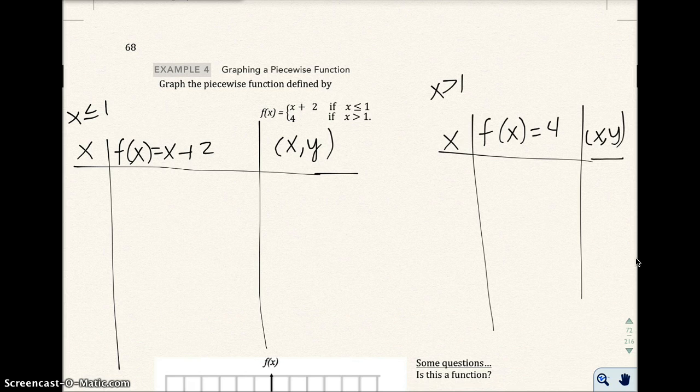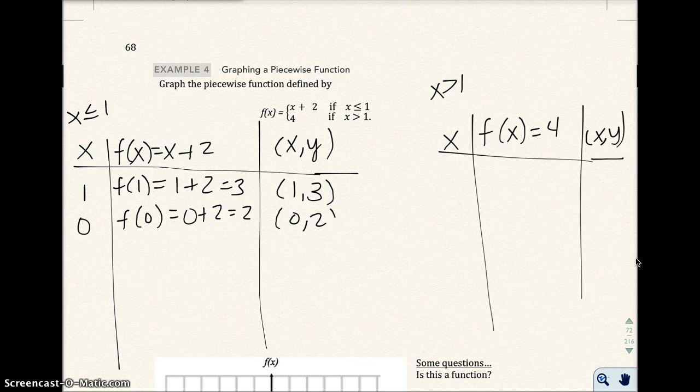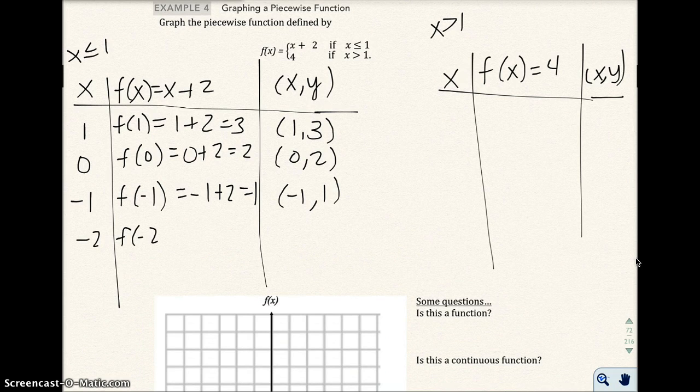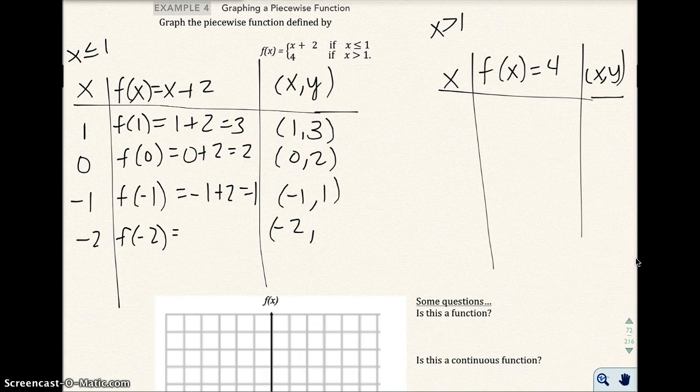And then the second function is f(x) = 4, where x has to be greater than 1. I'm going to start with 1 here and get some ordered pairs. 1 plus 2 equals 3, so I get (1, 3). Less than 1 would be 0, so I get 0 plus 2, which is 2. Then negative 1 gives me negative 1 plus 2, which is 1. And negative 2 plus 2 is 0. I'll do just enough points to get an idea of what the graph looks like.